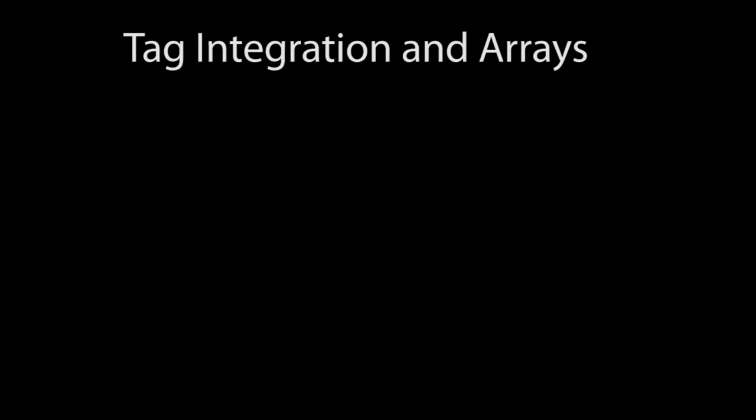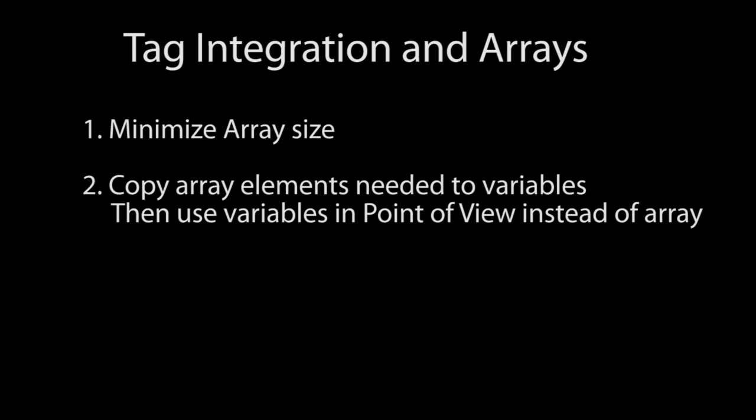There are three ways around this. First, don't make your Productivity 2000 arrays arbitrarily large – keep them as small as possible. Second, if POV only needs a small number of the array values, then consider copying those values to dedicated memory locations outside of the array and then use those tags in POV instead of the actual array values. It's fine that the array is in the CSV file, as long as POV doesn't use any of the array values, your tag count won't take a hit.